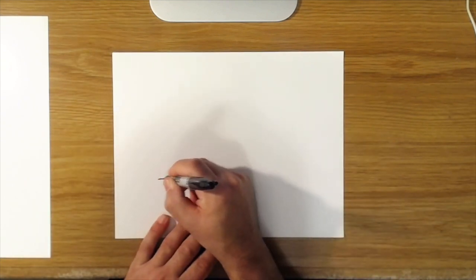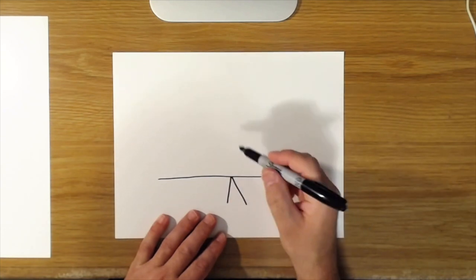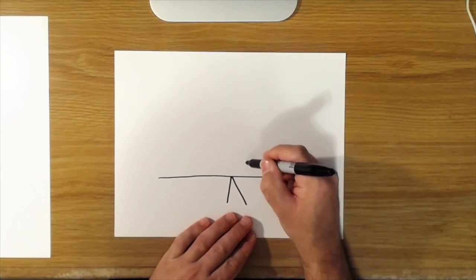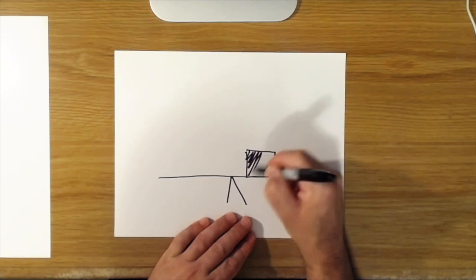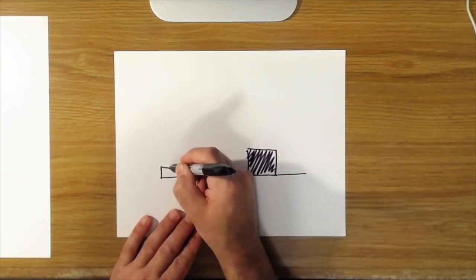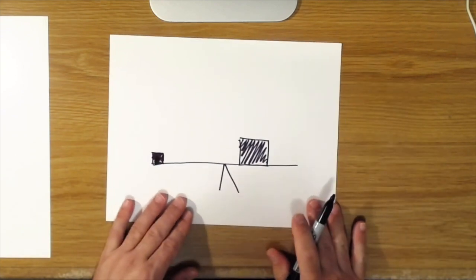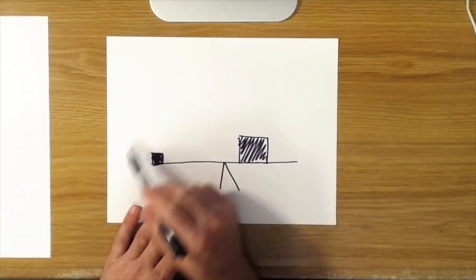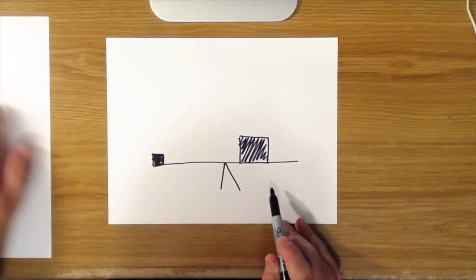An example of asymmetrical balance on your teeter-totter would be if you had a large mass closer to the center, you would balance that by putting the smaller thing out near the edge like that. So now it's balanced but it's asymmetrical, and this is much more interesting to the eye in artwork and design.